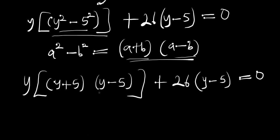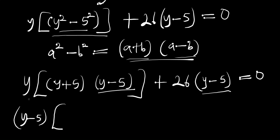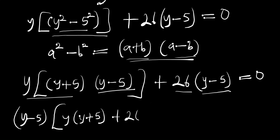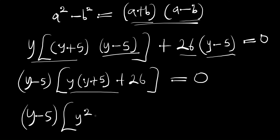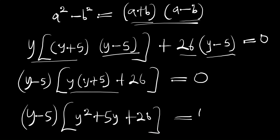We factor out the common term (y - 5) from both parts. We get (y - 5)[y(y + 5) + 26] = 0, which expands to (y - 5)(y² + 5y + 26) = 0.